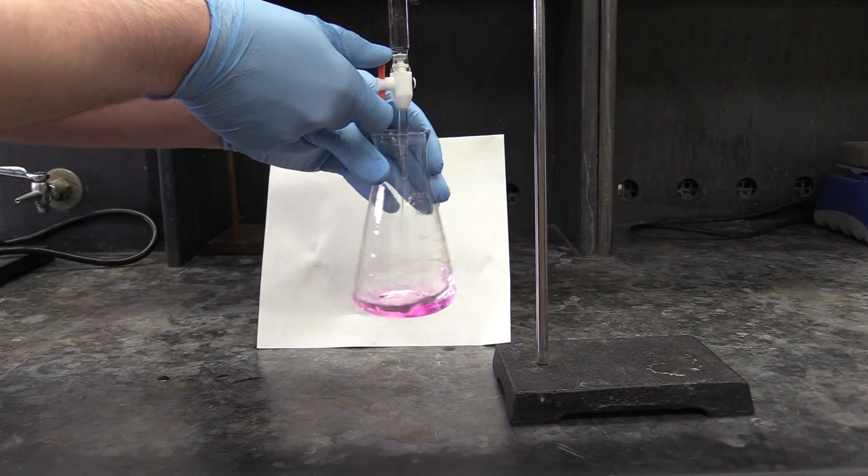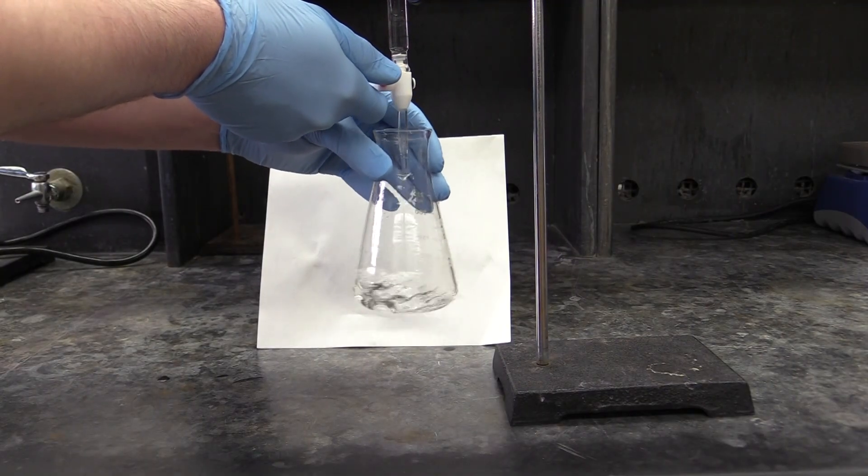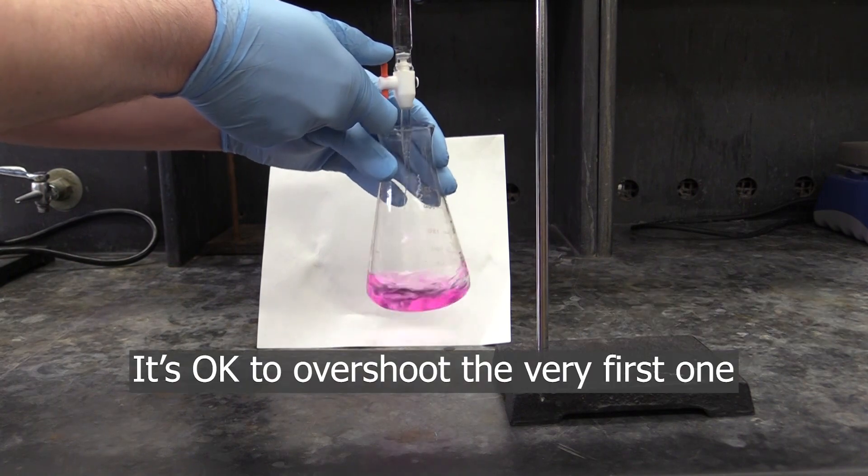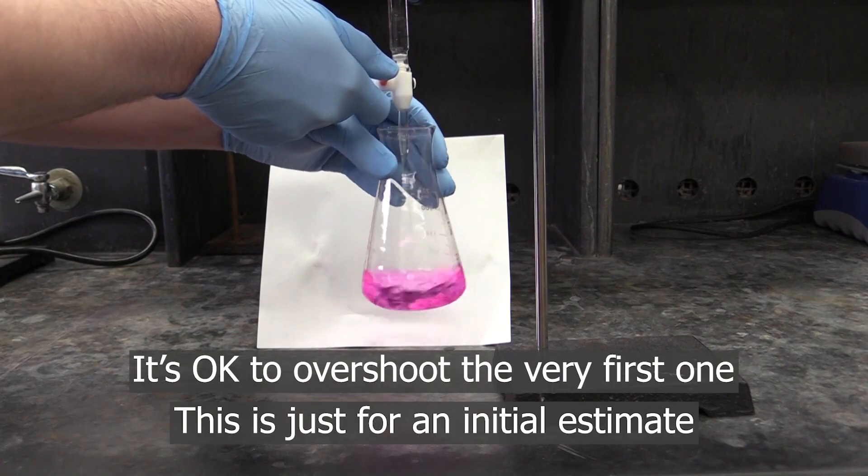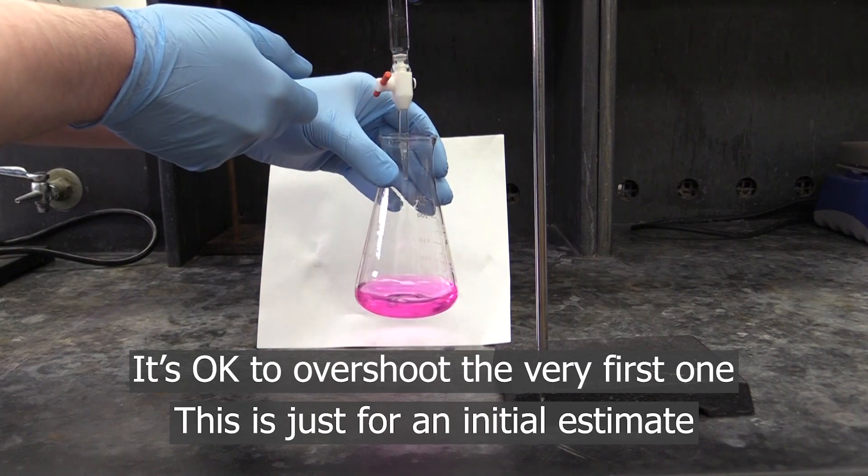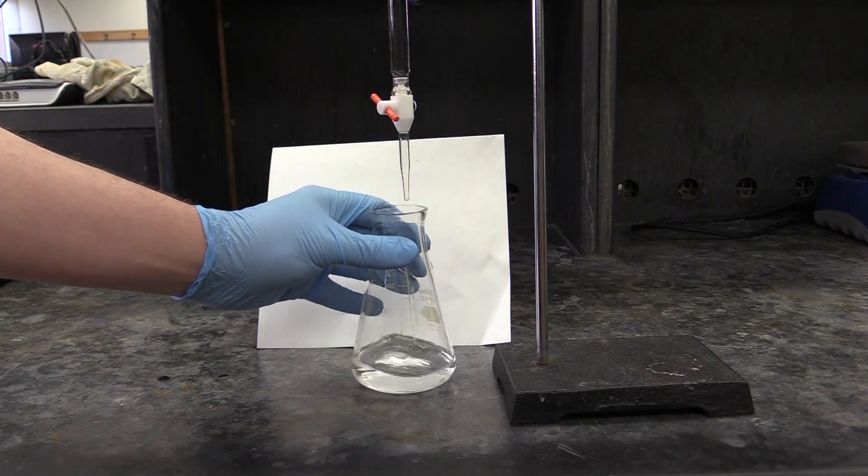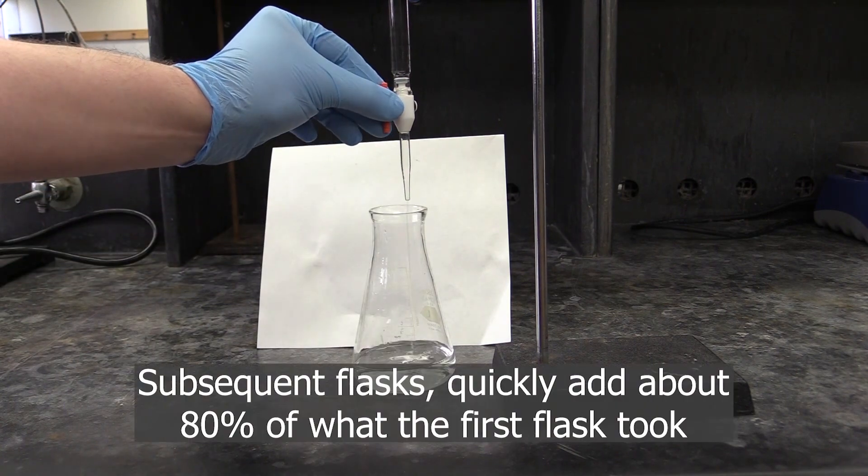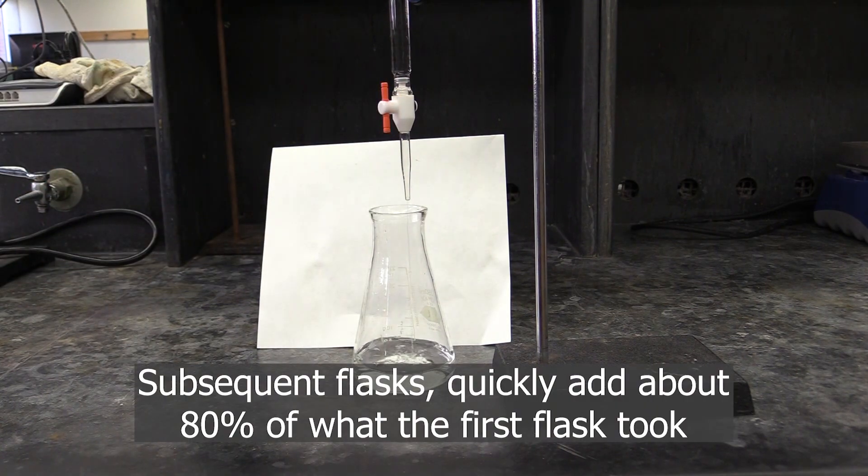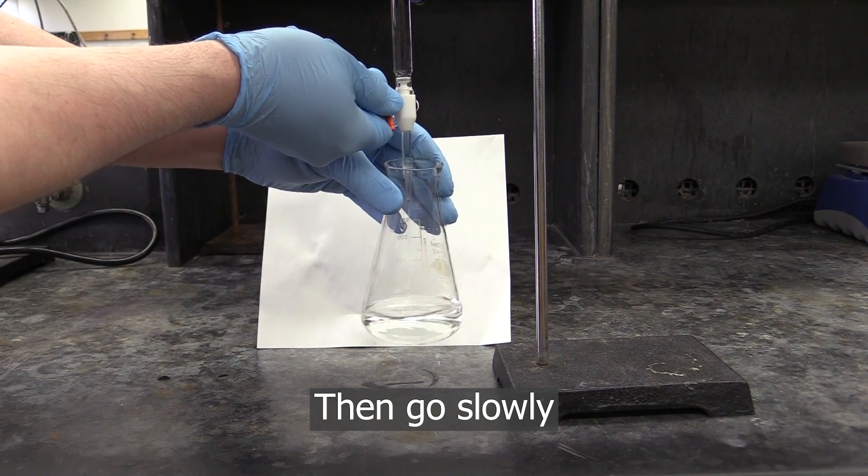Titrations can be slow, but there is one thing you can do to make this experiment go a little bit quicker. Don't try and be super careful with the first flask you titrate. Do it quickly just to give yourself a rough idea how much titrant you'll need. Once you know that, on the subsequent flasks you can crank the burette valve wide open to bring them close to the endpoint, and then go slowly and carefully from there.